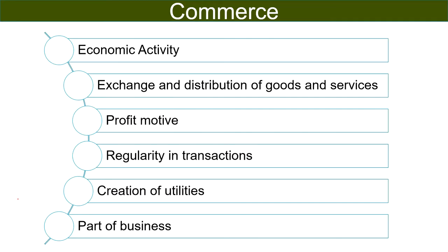Moving on to the characteristics of commerce. First of all, commerce is an economic activity, because these activities are undertaken with the motive of earning money. Next, it involves exchange and distribution of goods and services. Goods are bought or produced for the purpose of resale, and the motive of commerce is to earn profit. Any transaction that does not result in the generation of profit does not form part of commerce. Also, there must be regularity in transactions — transactions must take place on a large scale on a regular basis to be called commerce.